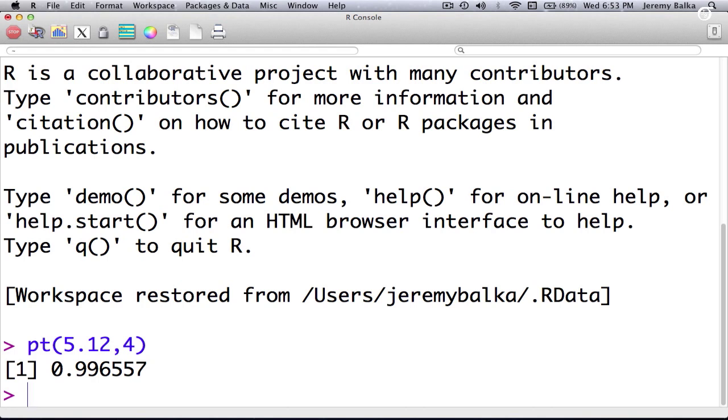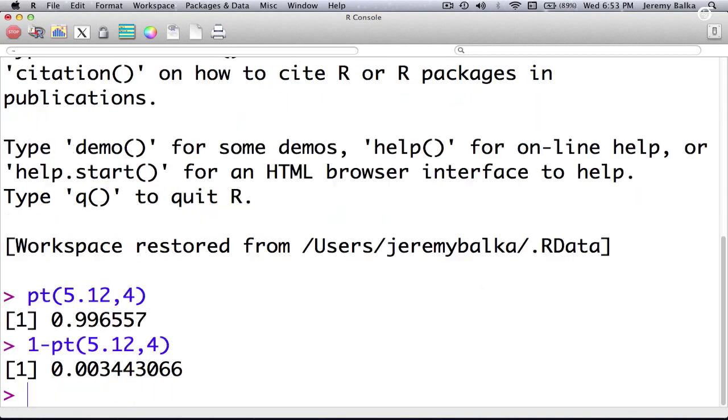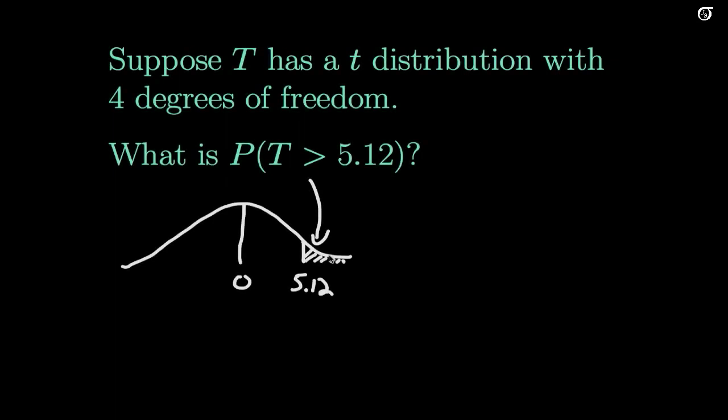Now that's not what we want though, we want the area to the right. We know that continuous probability distributions have a total area of one, so our area to the right is simply one minus that quantity, and we get an answer of 0.00344. So this area is 0.00344, and that would be our answer if we had access to a computer.